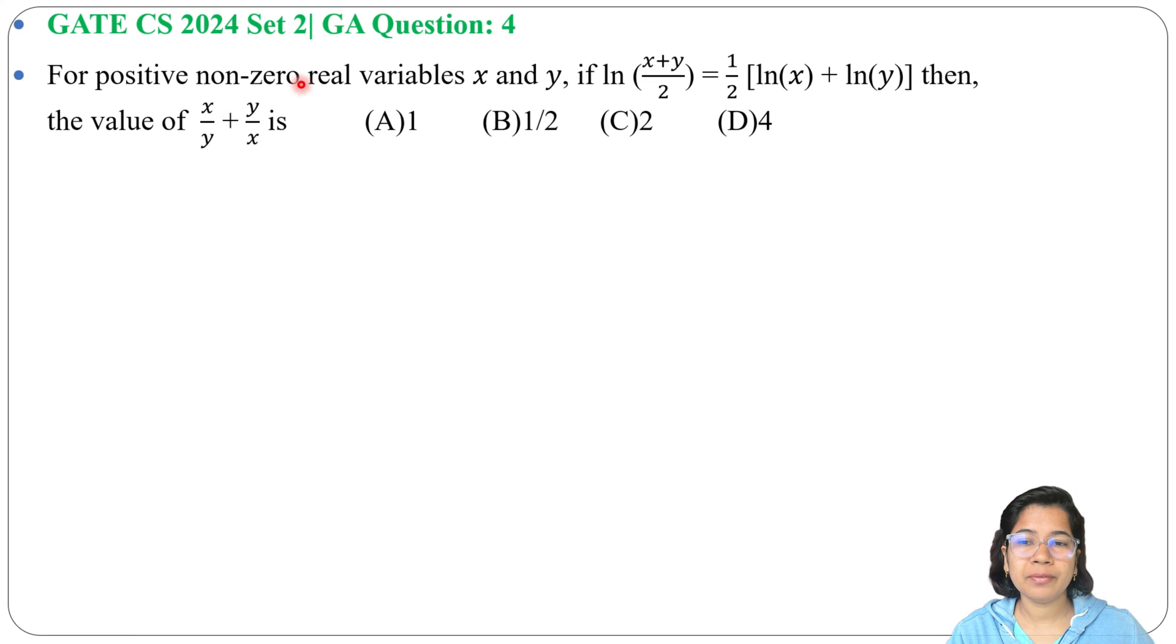For positive non-zero real variables x and y, if ln((x+y)/2) = (1/2)[ln(x) + ln(y)], then find the value of x/y + y/x. Four options are given.